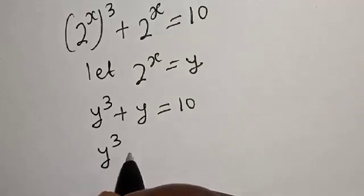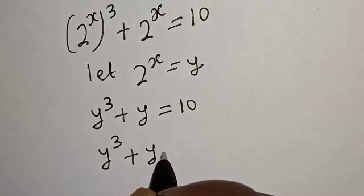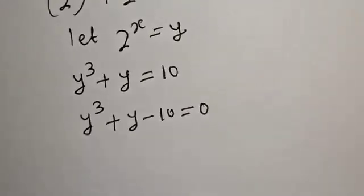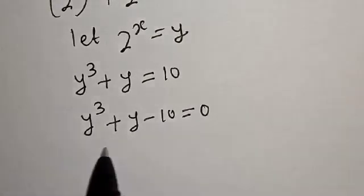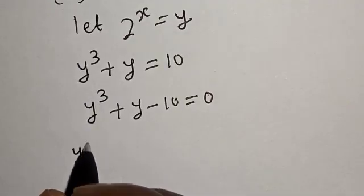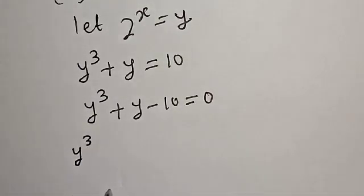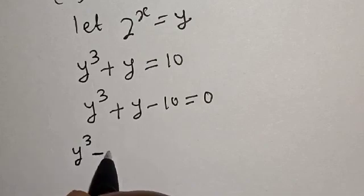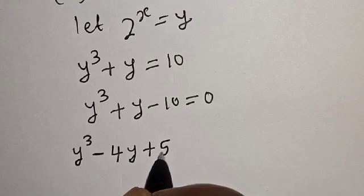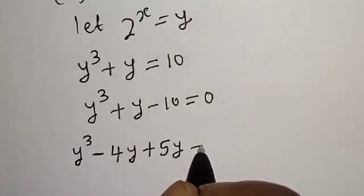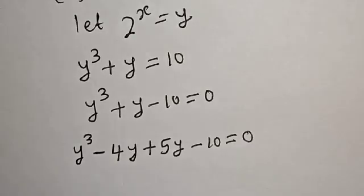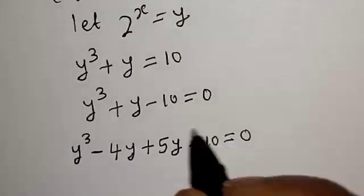Let's bring this 10 to this side. y raised to power 3 plus y minus 10 is equal to 0. Then, this is rewritten as y cubed minus 4y plus 5y minus 10 is equal to 0.